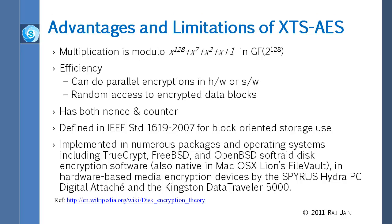This mode has both nonce and counter properties. A nonce means you never use any of the numbers again — I is not used again, J is not used again. I and J also look like counters. It is already implemented in packages you can use. For example, TrueCrypt is a public domain software you can use to encrypt your disks, and it is very highly secure — there was a story that some drug dealers, the FBI got them but could not decrypt their data.